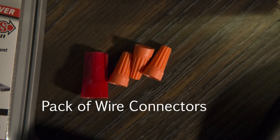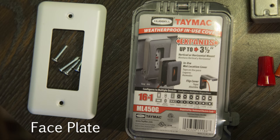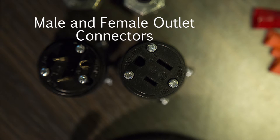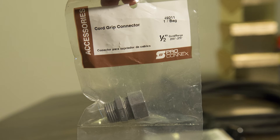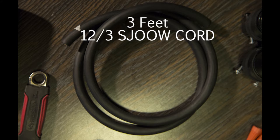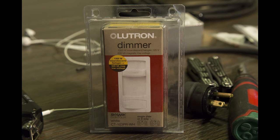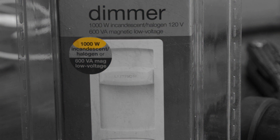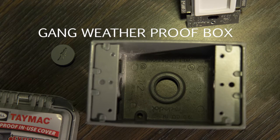For this build, you're going to need orange and red wire connectors, a faceplate or a weather faceplate depending on how you want to build this, male and female outlet connectors, two cord grip connectors, Teflon tape, three feet of 12-3 SJOOW cord, a Lutron thousand-watt dimmer switch, and when you're in the hardware store, make sure it says a thousand watts, and one gang weatherproof box.